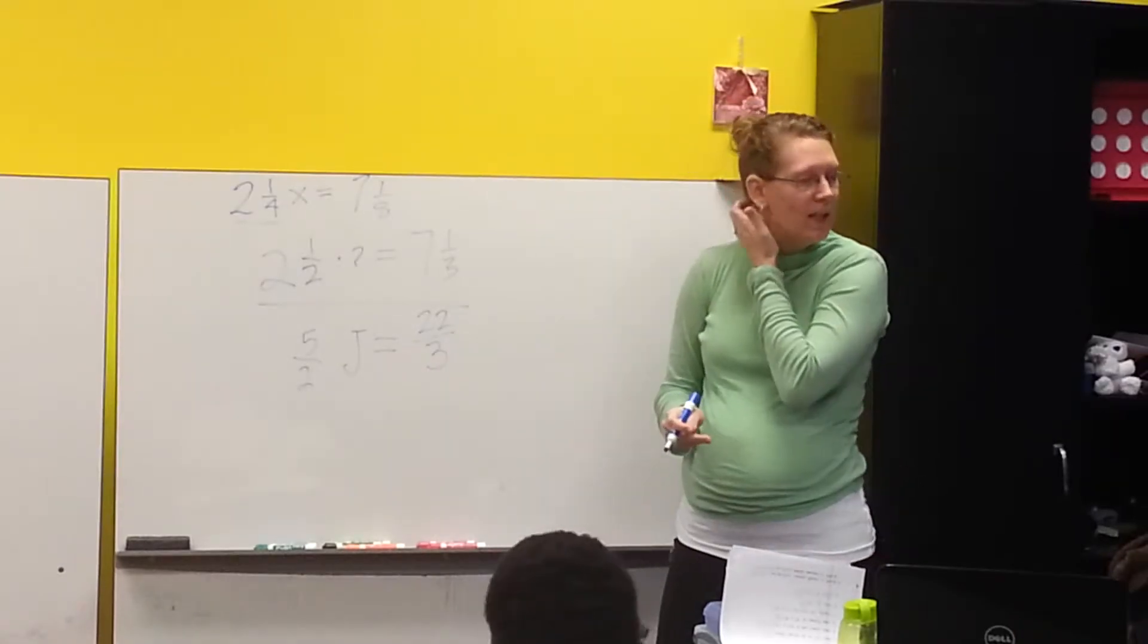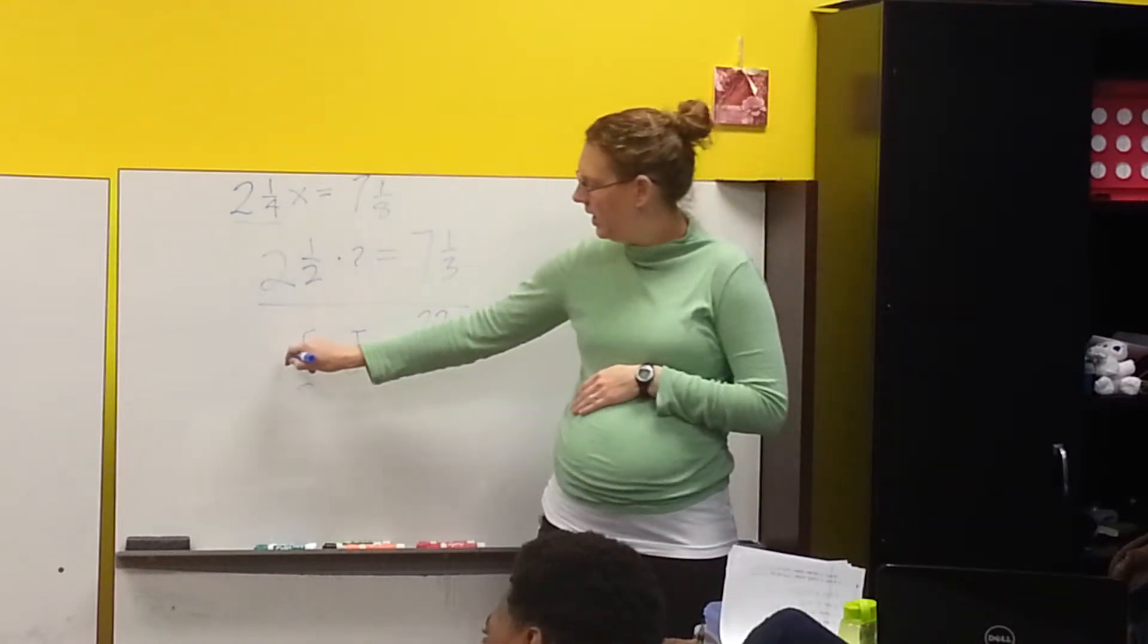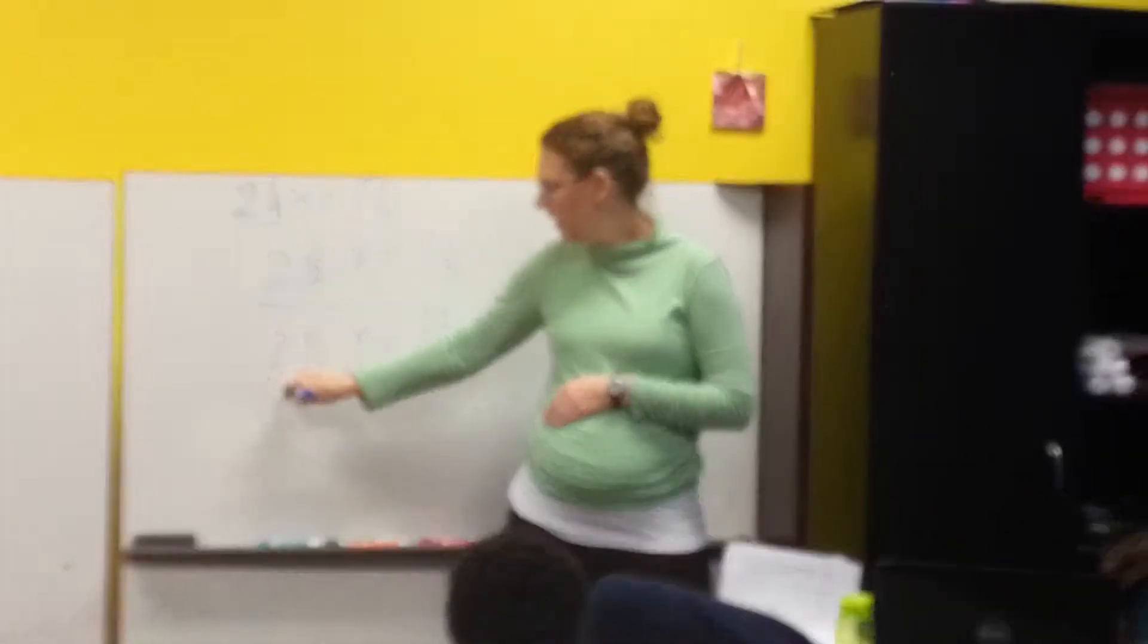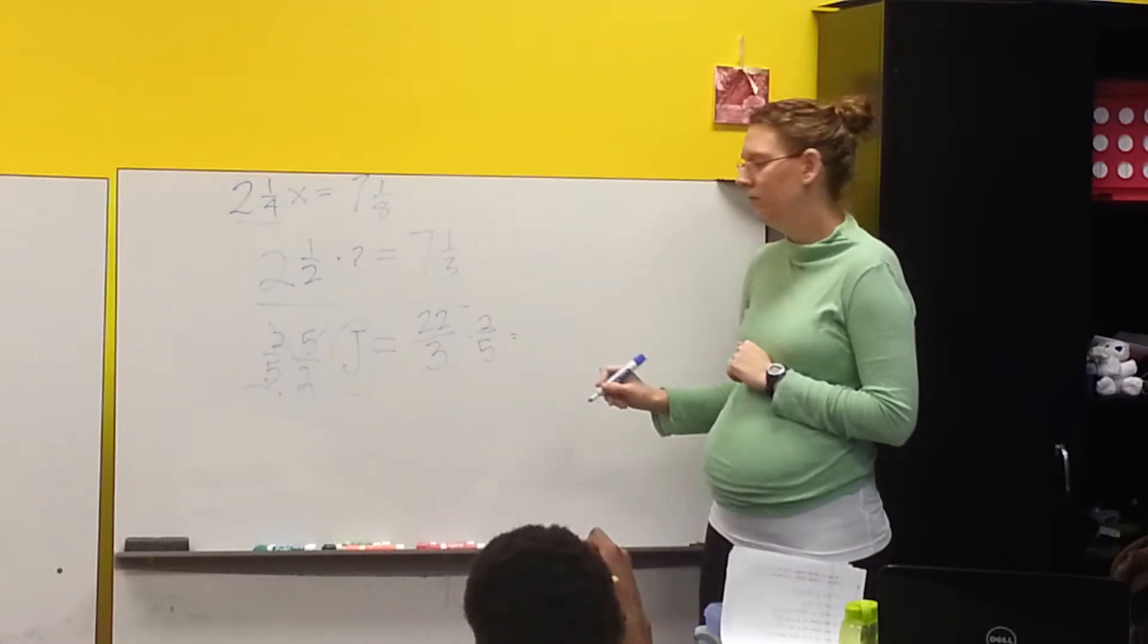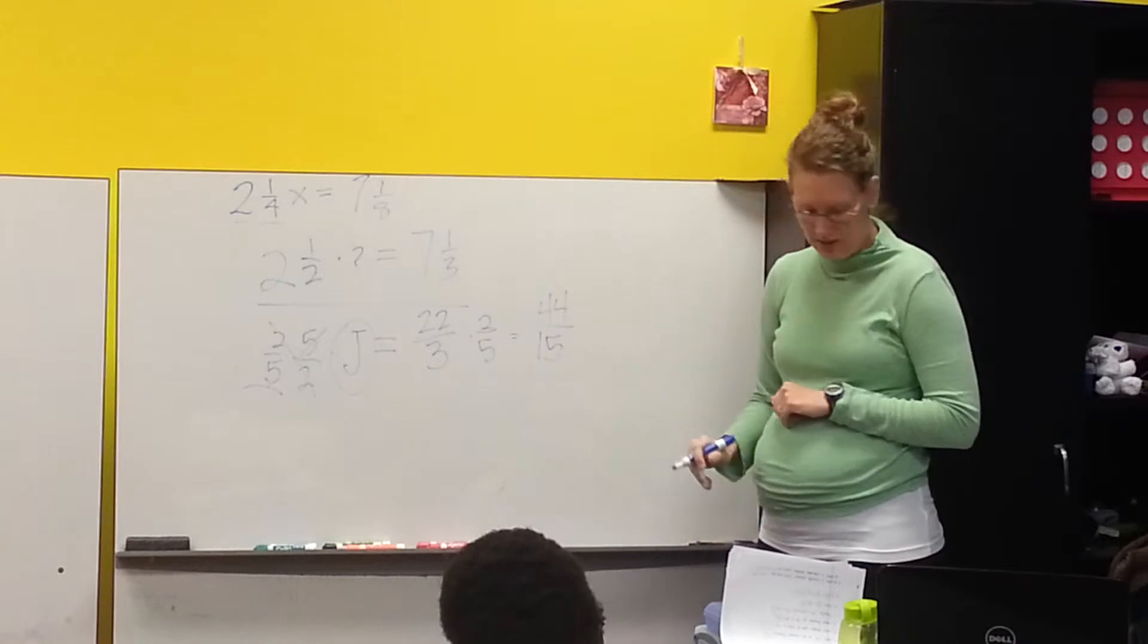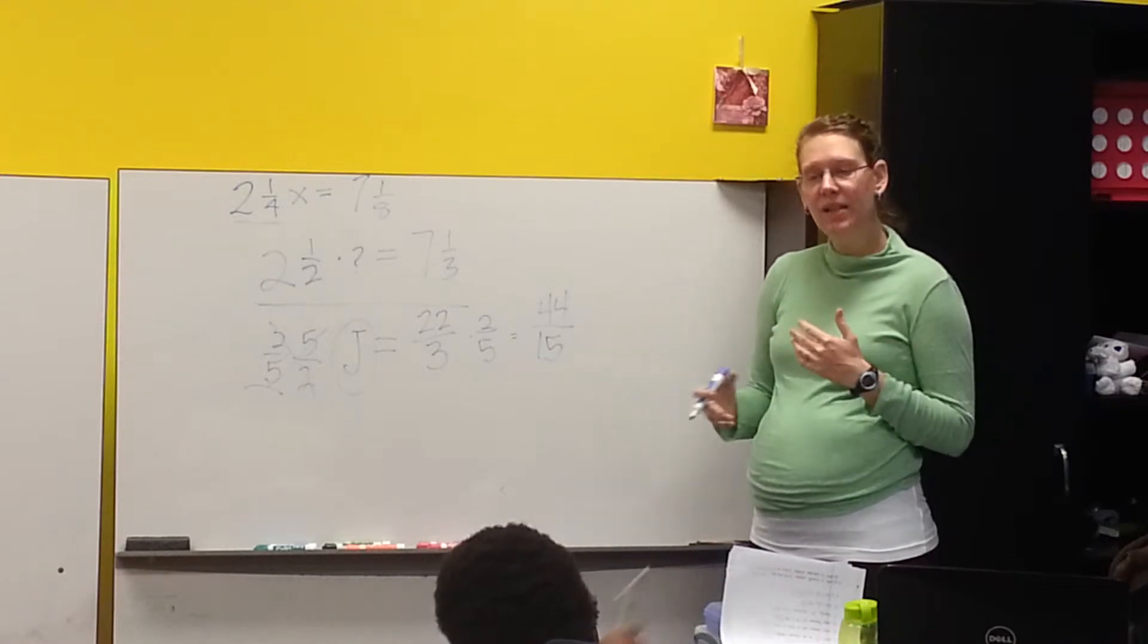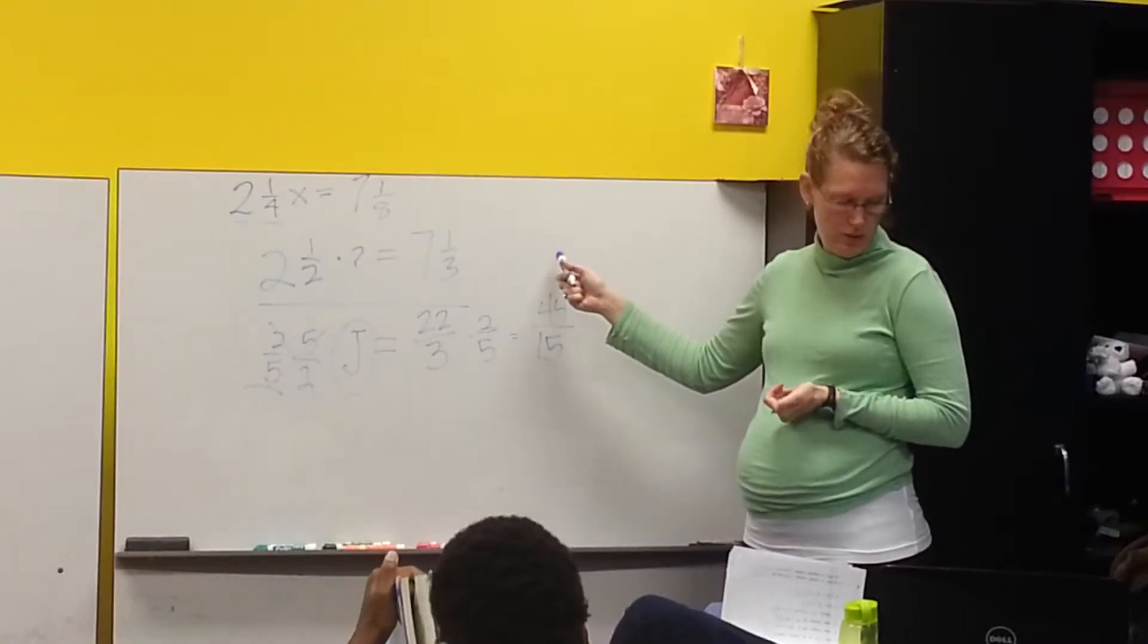Okay, so now how do I get J all by itself? 22 over 3 times 2 over 5. Good, she took it. Okay, make sure you show it on this side, because we need to see those canceled, so all you're left with is J, okay? So, Jameka, can you take me home? 44 over 15. Good. That's your answer. Okay? 44 over 15. You could write that as a mixed number if you want to. You can leave it like this. As long as this is reduced and simplified, you are good to go.